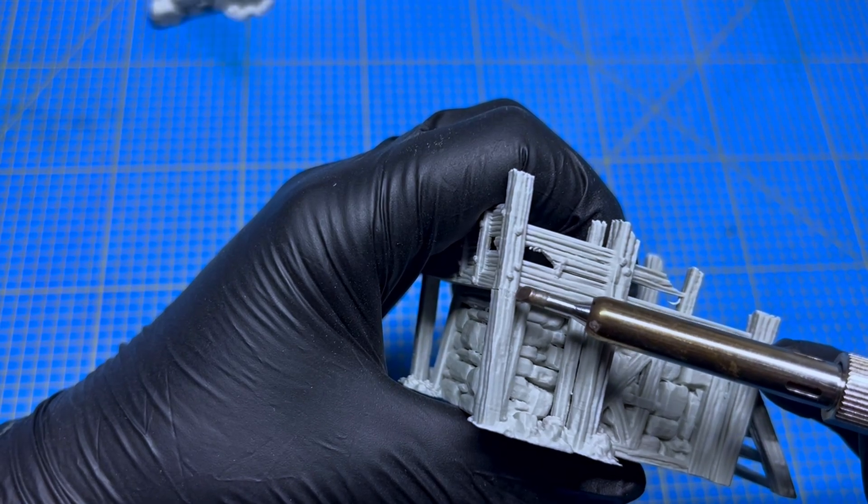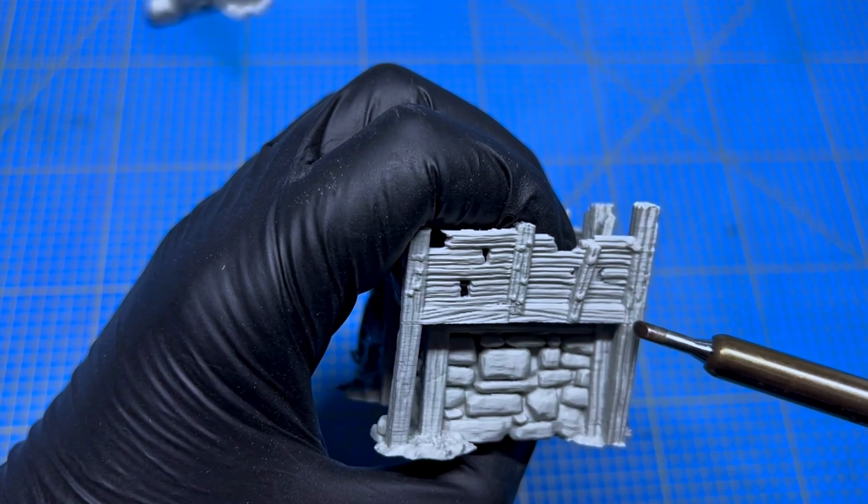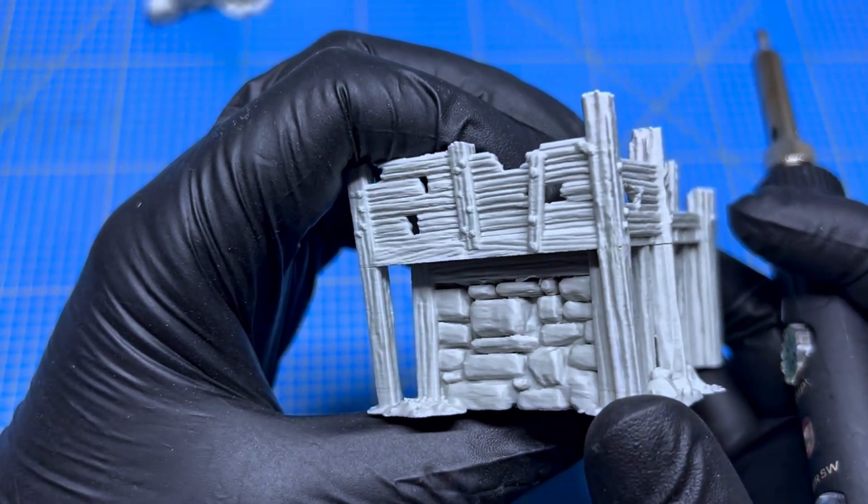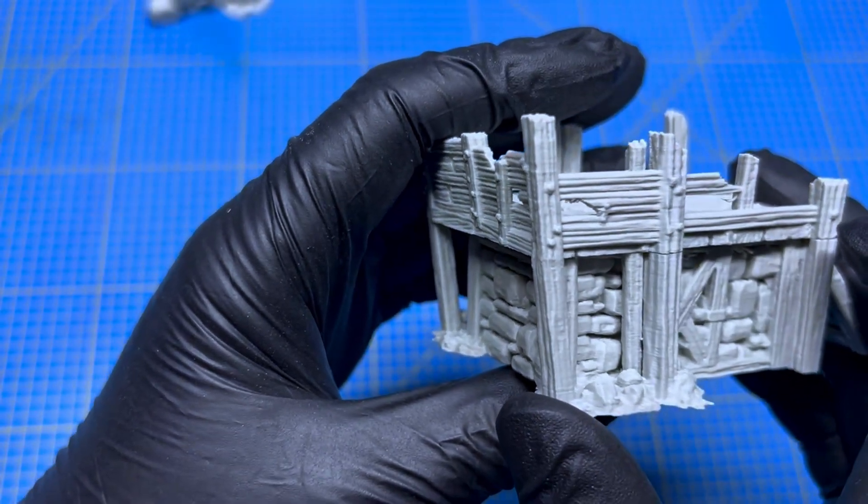If it gets too hot, turn it off for a bit. Then keep working with less heat. Look, the seam is almost gone. Feels like magic, right?